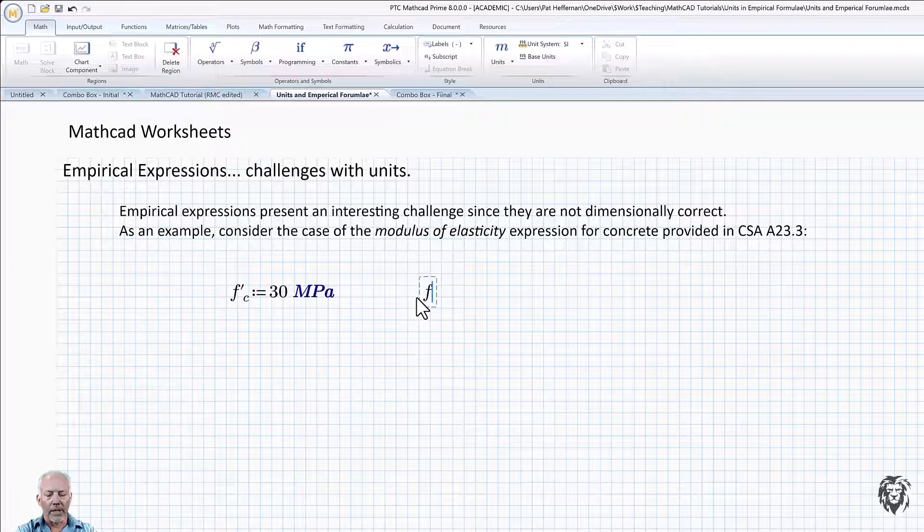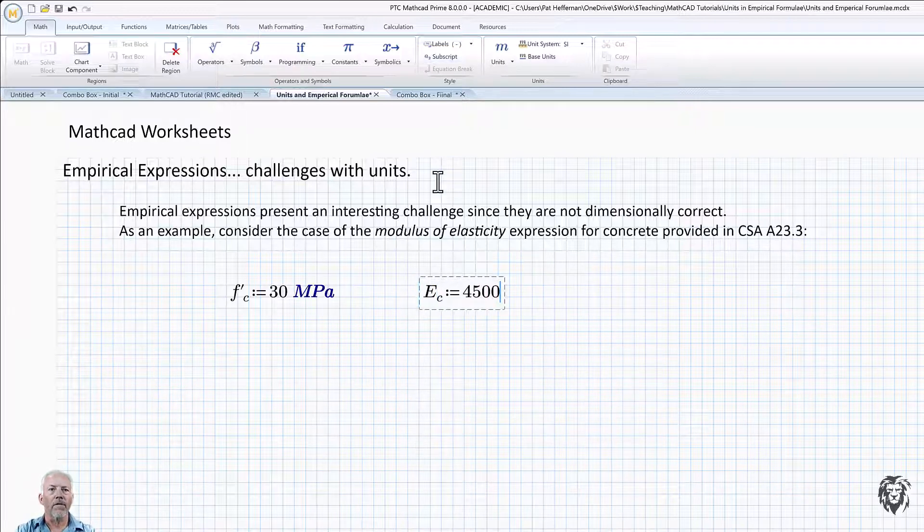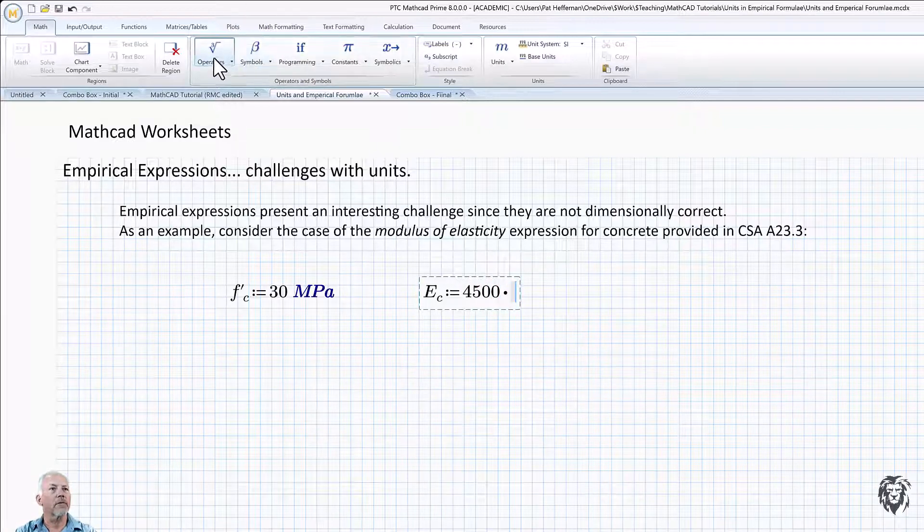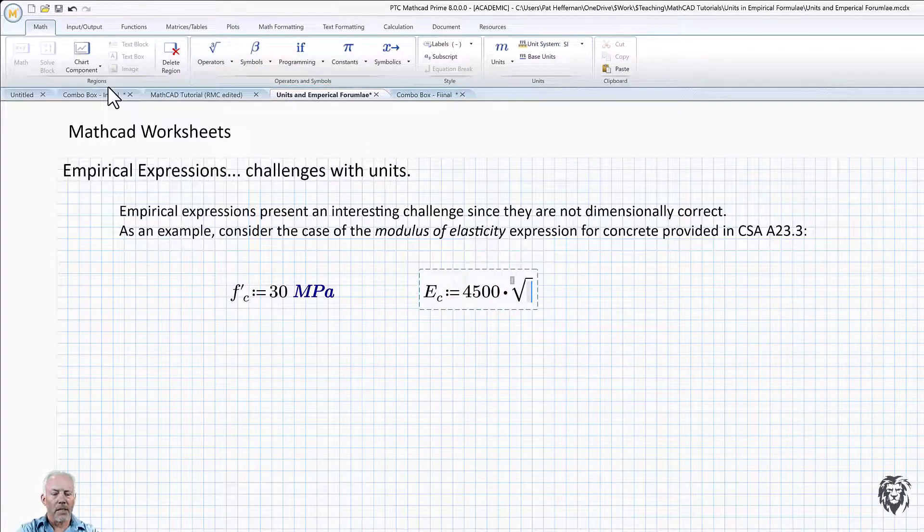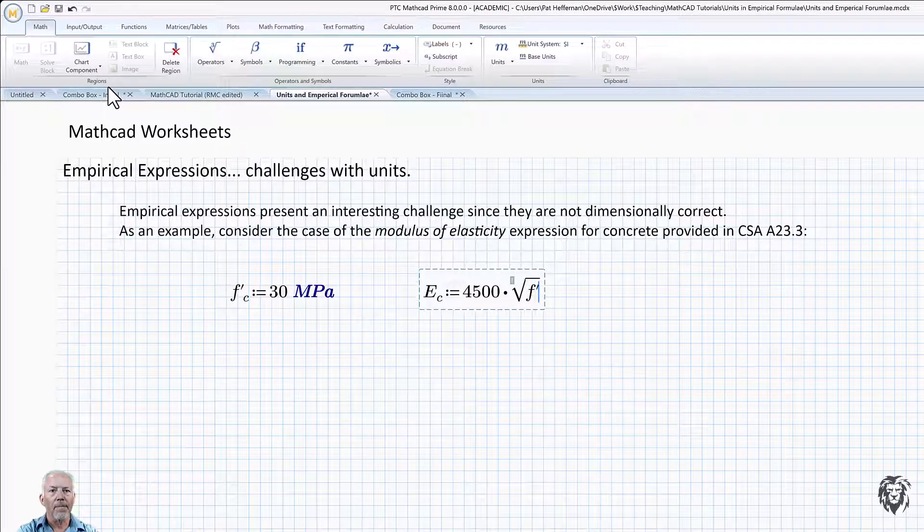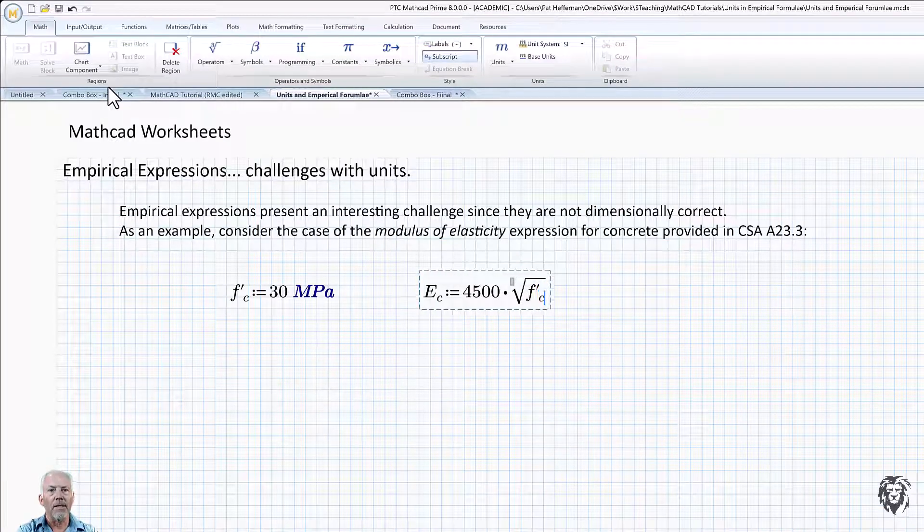And so we have our modulus of concrete, E_c = 4500 times the square root of F prime C.